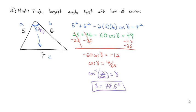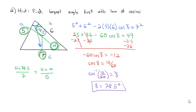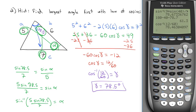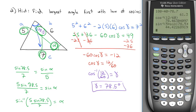Now that we have one angle, we can use the Law of Sines for the next. Let's go after alpha, which is opposite side A (which is 5). Gamma is across from C (which is 7). The Law of Sines gives: sine of 78.5 over 7 equals sine of alpha over 5. Multiplying both sides by 5: sine of alpha equals 5 sine of 78.5 over 7. Taking the sine inverse on the calculator — sine inverse of 5 times sine of 78.5, divided by 7 — gives alpha equal to 44.4 degrees.